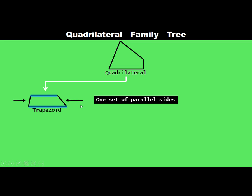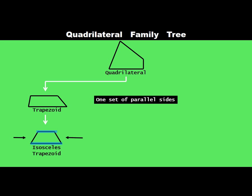This is what makes something a trapezoid — just one set of parallel sides. If we took those two other sides, what we call the legs, and made them the same length, we get what's called an isosceles trapezoid. Isosceles means the same thing it did with triangles, where just the two sides are the same. So our isosceles trapezoid has two congruent legs in a trapezoid.